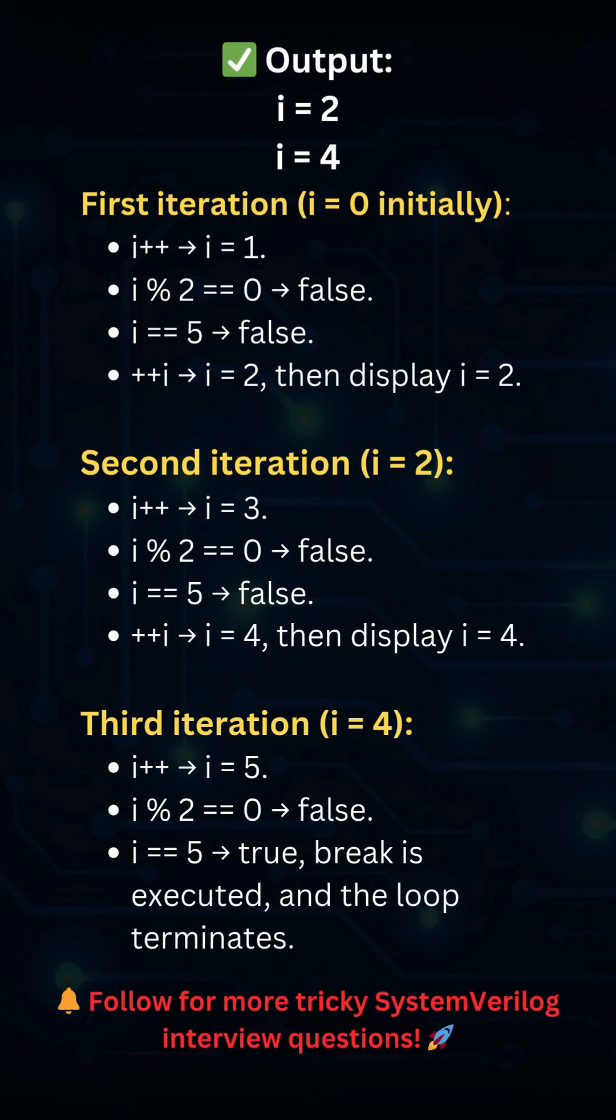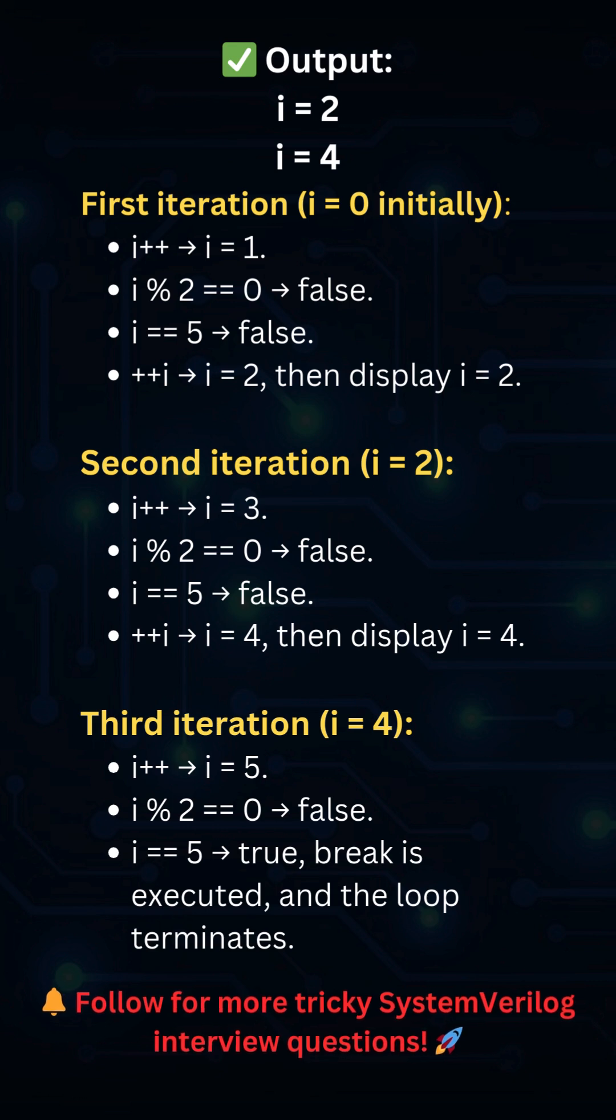Now what will be the output of the code? The final output is i = 2, i = 4. Now let's see why. In the first iteration, initially i is 0, i++ makes it 1.